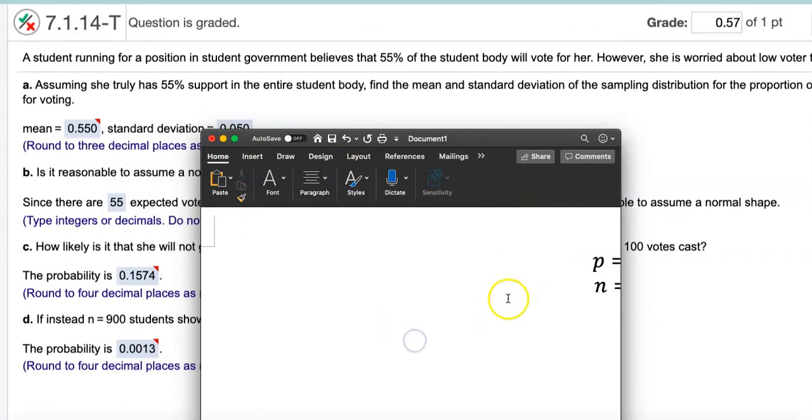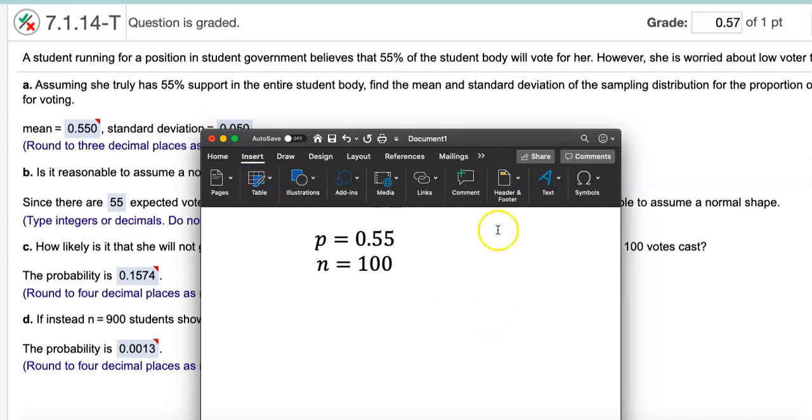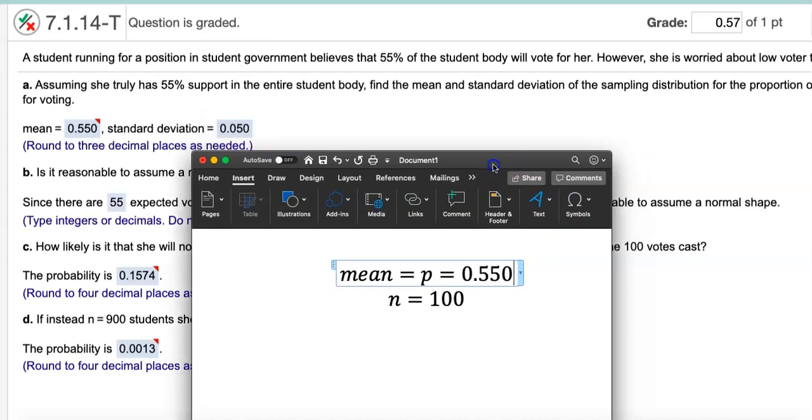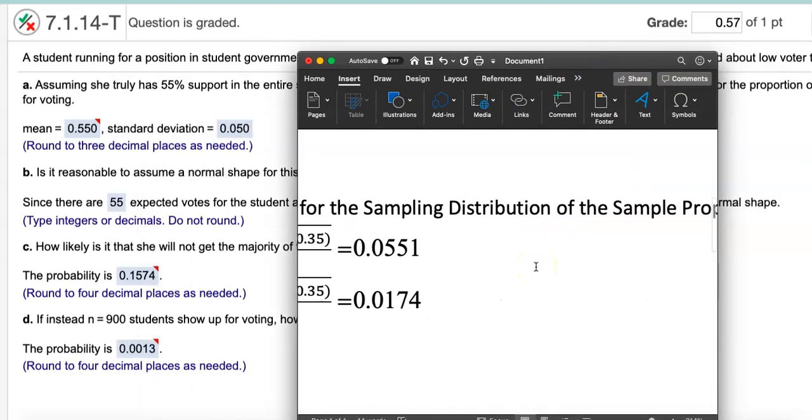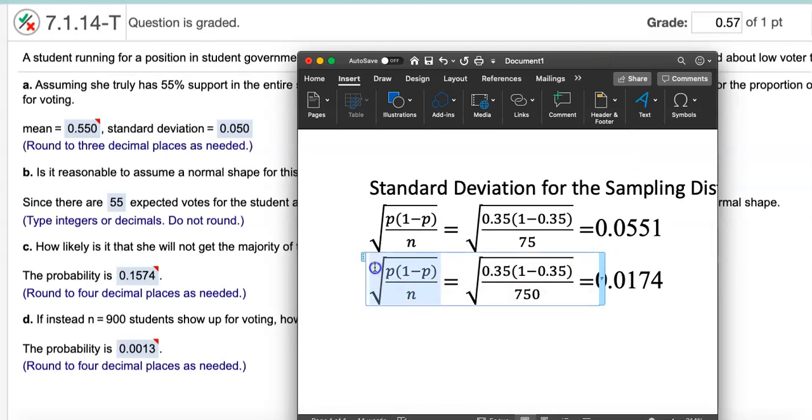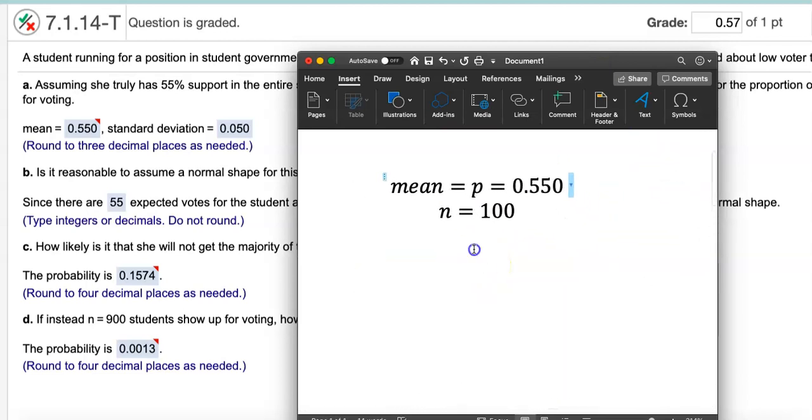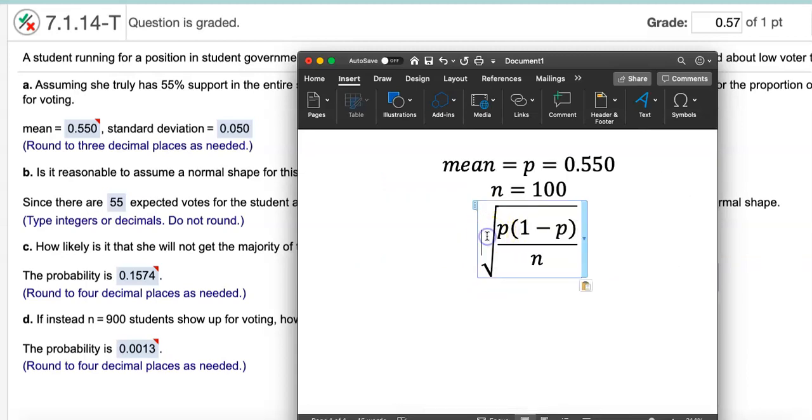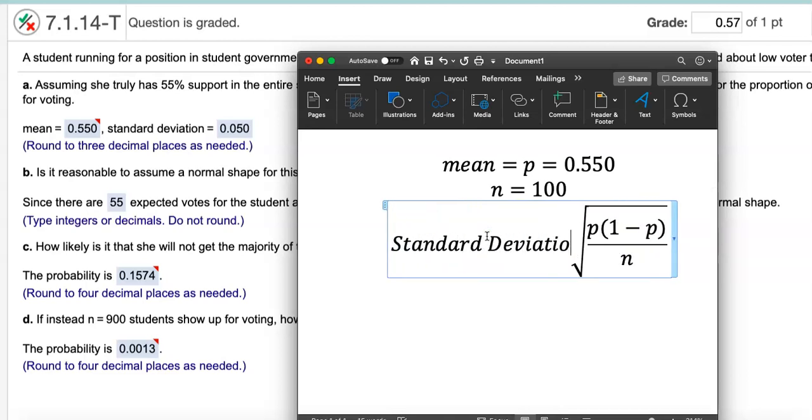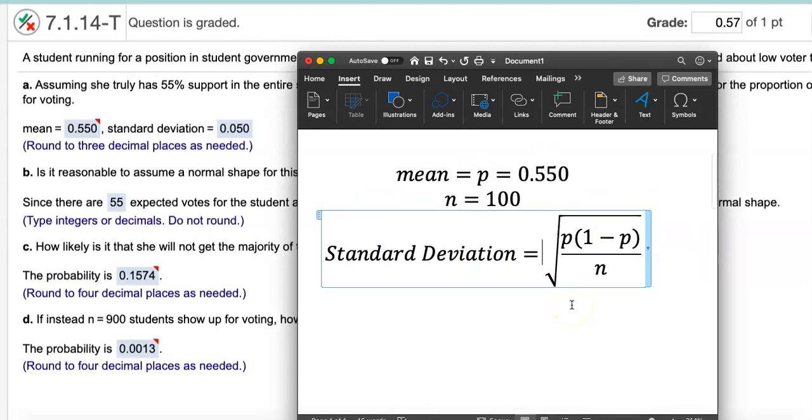Now remember the formulas. For sampling distribution of sample proportion, the mean is actually equal to the P itself, the population proportion. When they ask you to find the mean and round to three decimal places, that's 0.550. For the standard deviation, you have to use that bigger formula. The formula is P times one minus P divided by n. You can plug them in and that's how you got 0.050.